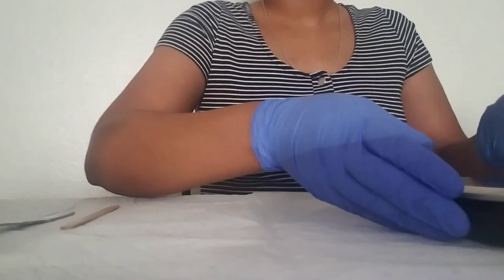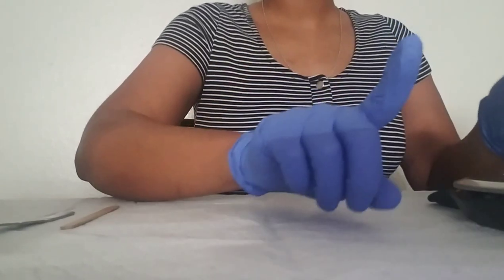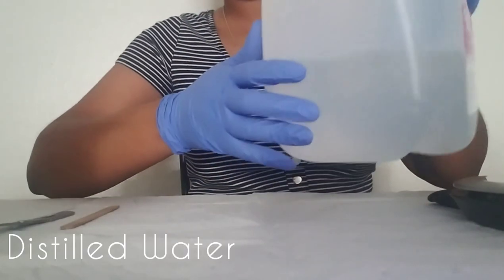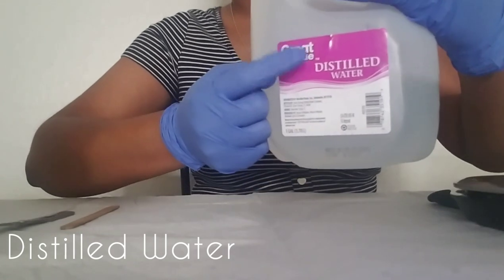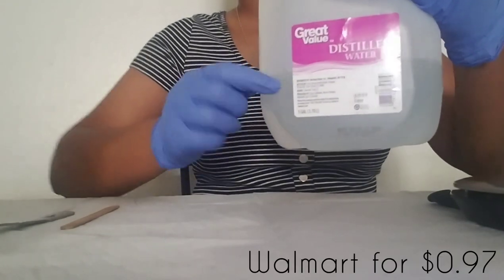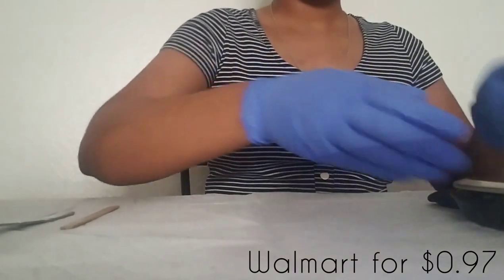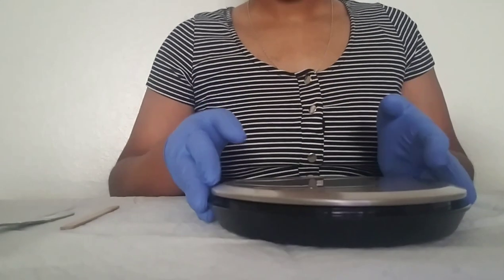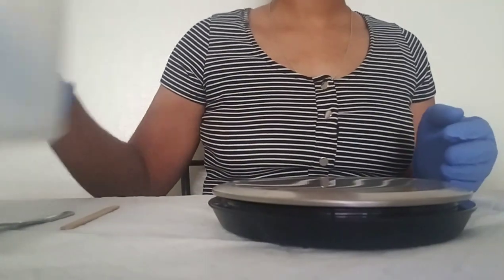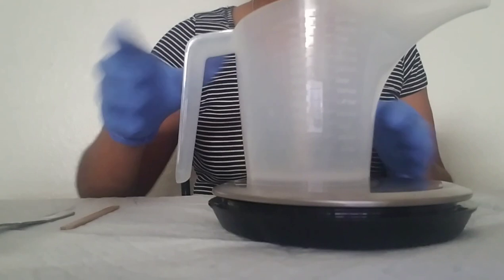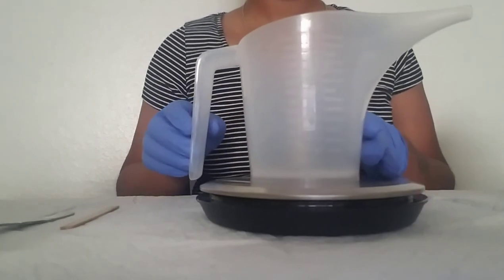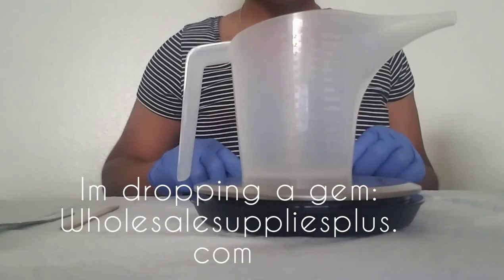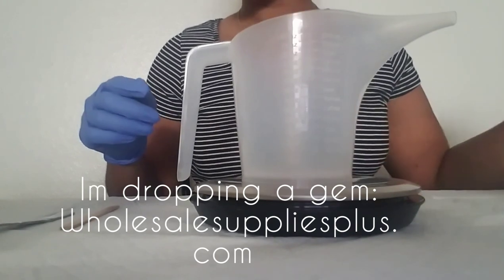Right now I'm just gloving up. Oh hold on, I forgot to show you guys that I get my distilled water from Walmart—97 cents. This will be the base of the product. This is what the product will be mostly made out of. This pouring spout, which is also a measuring cup, I got off of Wholesale Supplies Plus as well for three or four dollars.